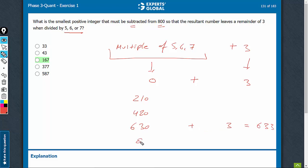So, what must be subtracted from 800? 800 minus 633, 167 must be subtracted, and therefore, C is the correct answer choice.